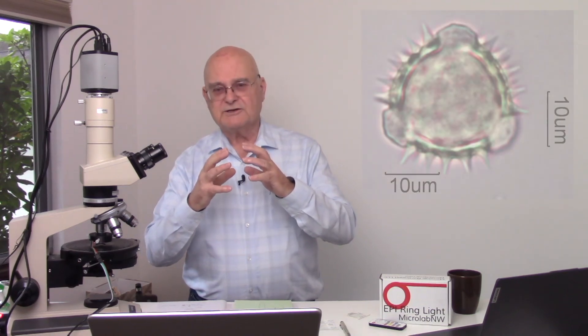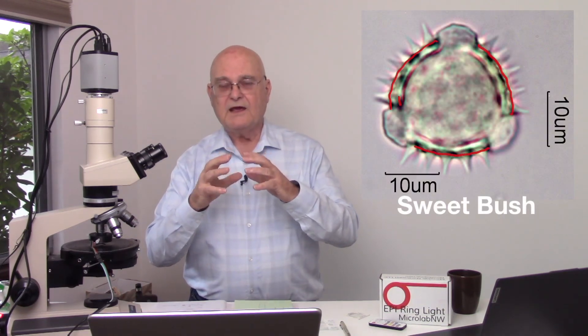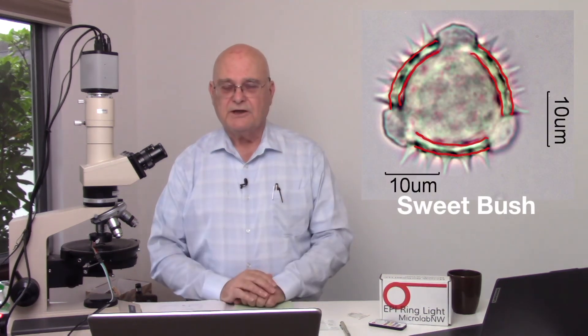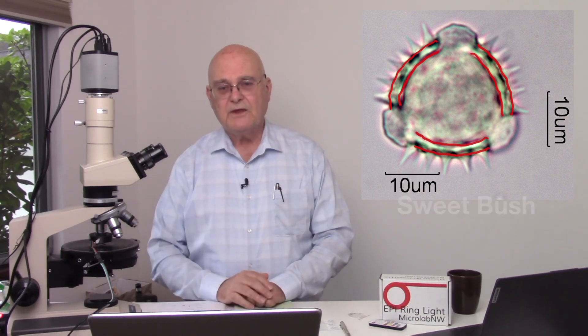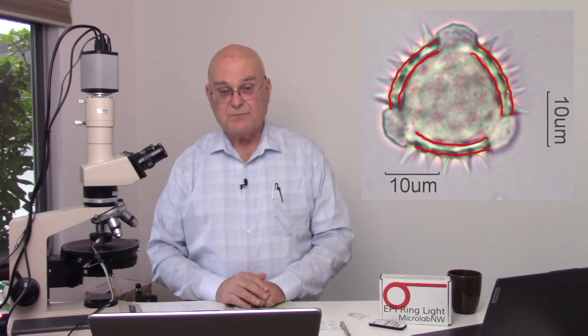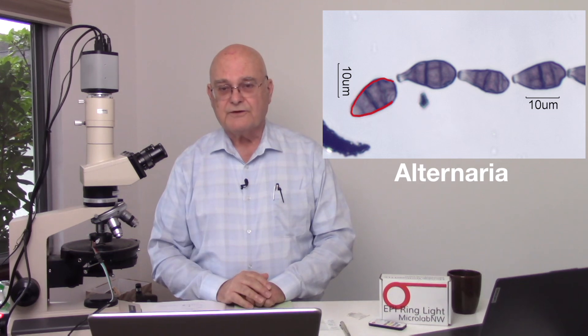Pollens have a complex double skin structure, and that helps us identify them as distinct from spores, which have only a single exterior surface.